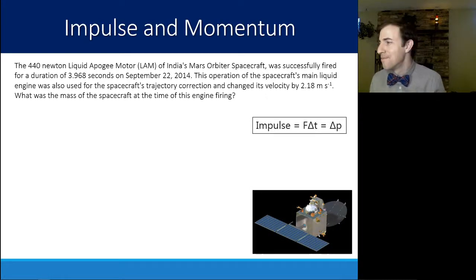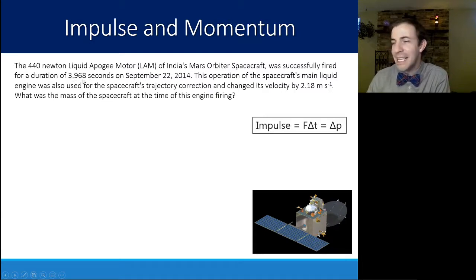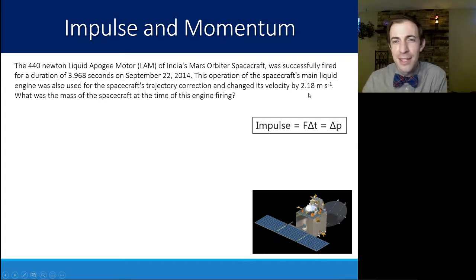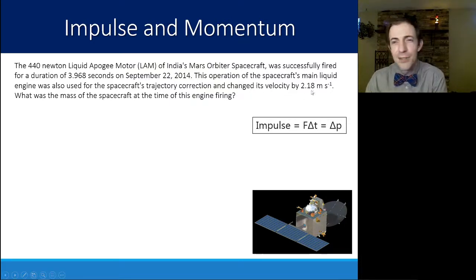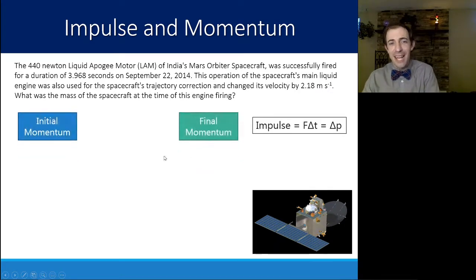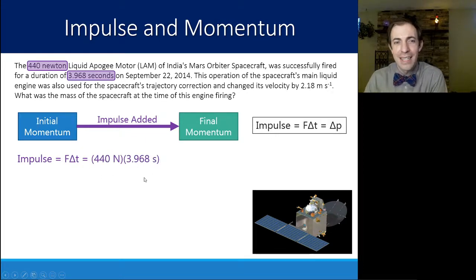We can also look at this in terms of a change. A 440-newton motor on India's Mars Orbiter spacecraft was fired for 3.968 seconds for trajectory correction, changing velocity by 2.18 meters per second. What was the mass of the spacecraft? We know the force of the engine, how long it was on, and the change in velocity — so we need to find the mass. Impulse equals force times time: 440 times 3.968.